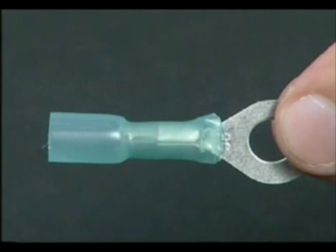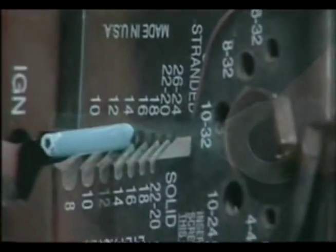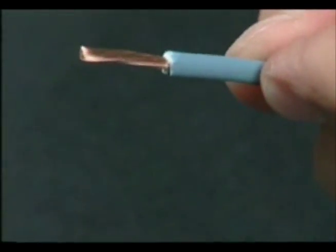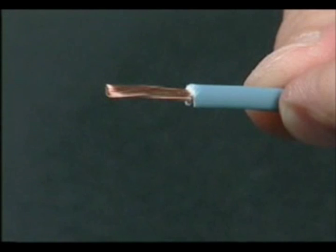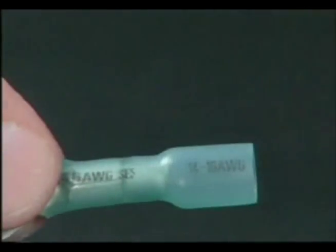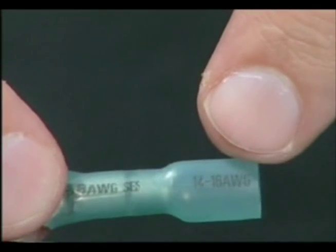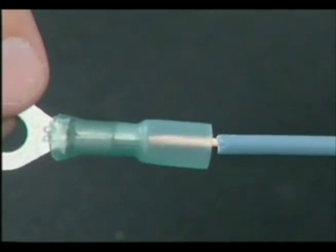To install sealed crimp and solder terminals, strip the wire insulation 1/2 of an inch. Select the proper sized terminal. Insert the wire into the terminal.